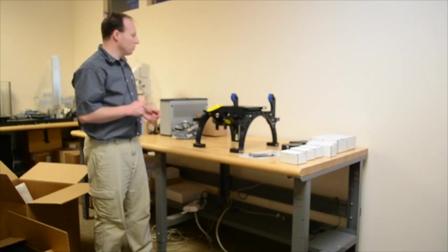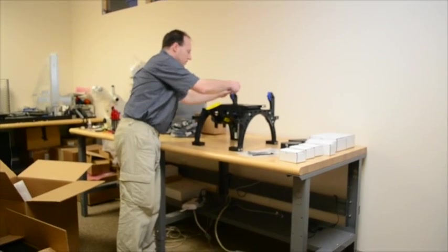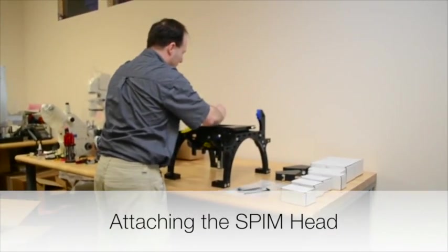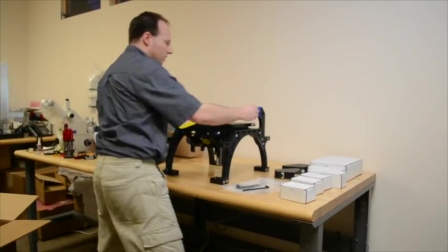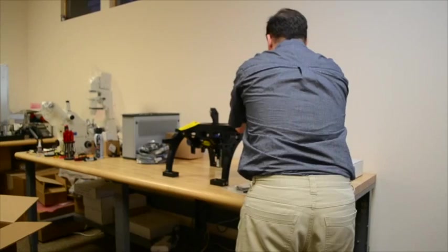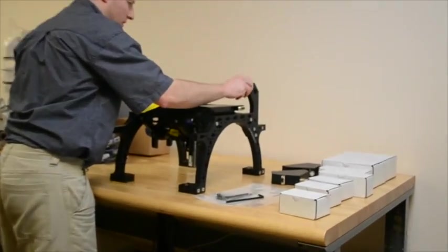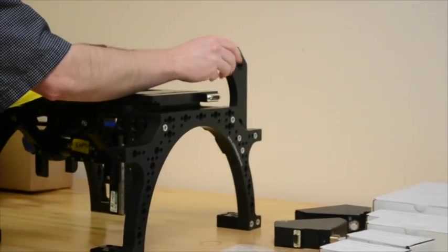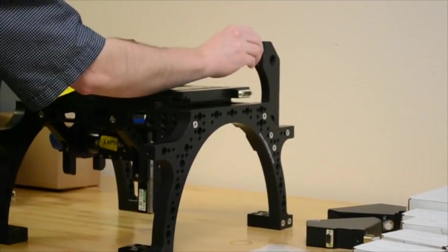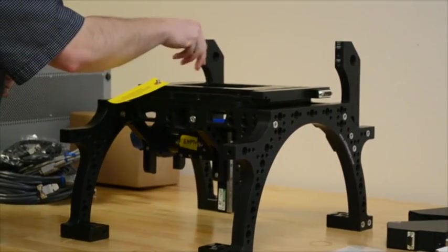So first though, let's go ahead and put the SPIM head on. If you take off this tape here, you'll see a couple of dowels, alignment dowels, and these big screws. This has an M6 head. Go ahead and take these off to start.